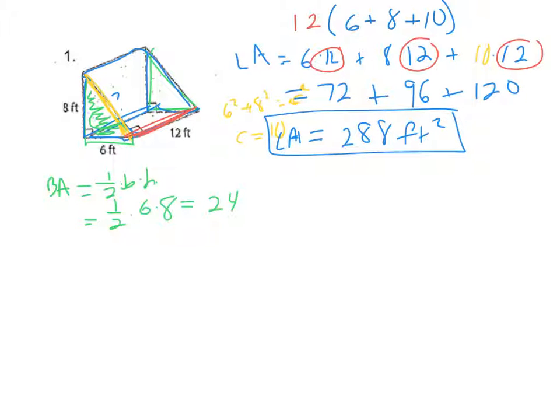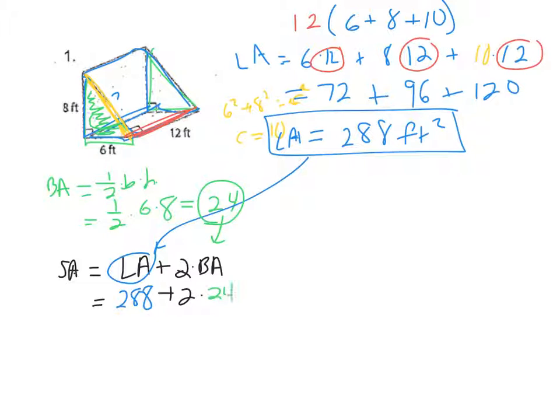I'm going to find my total surface area. If the teacher had just asked you to find surface area, we'd be doing the lateral area plus 2 times the base area because I have two bases. That's taking my lateral area 288 plus 2 times my base area. If I do that and do my math correctly, it's 48 plus 288 is 336 feet squared for my total surface area.